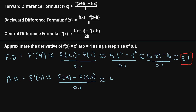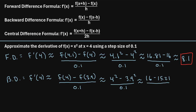So we have f of 4 minus f of 3.9, divided by the step size 0.1. Plugging in: f of 4 is 4 squared which is 16, minus f of 3.9 which is 3.9 squared, that turns out to be 15.21, divided by 0.1. When you punch this into a calculator, it comes out to 7.9. So using the backward difference formula, we estimate that the derivative at x equals 4 is 7.9.